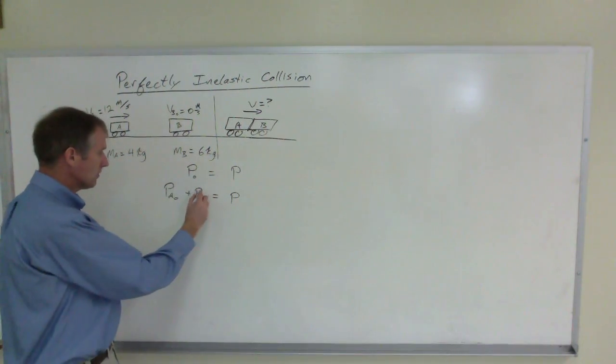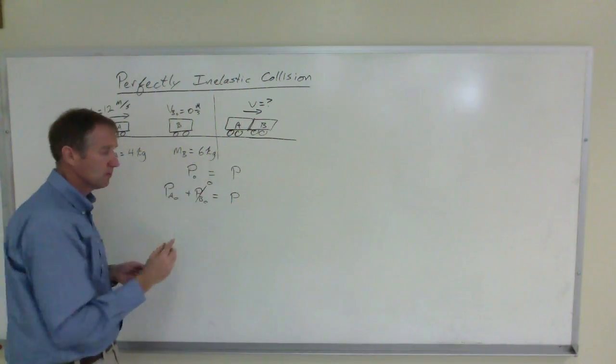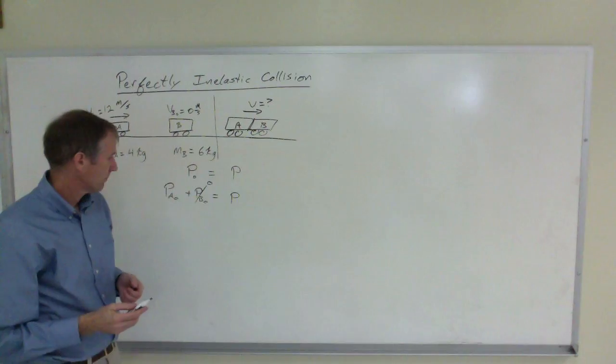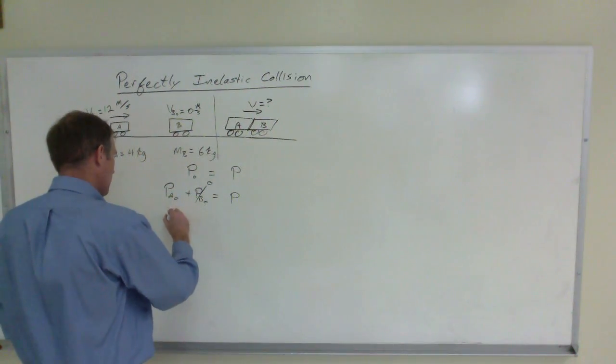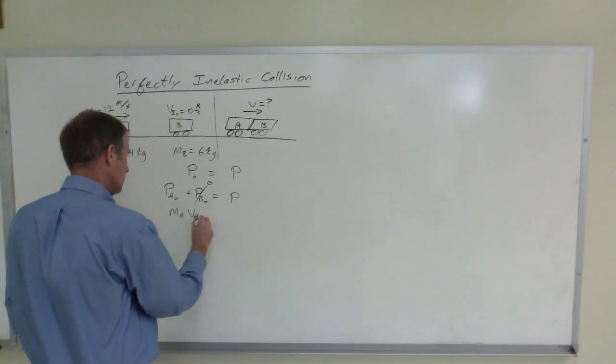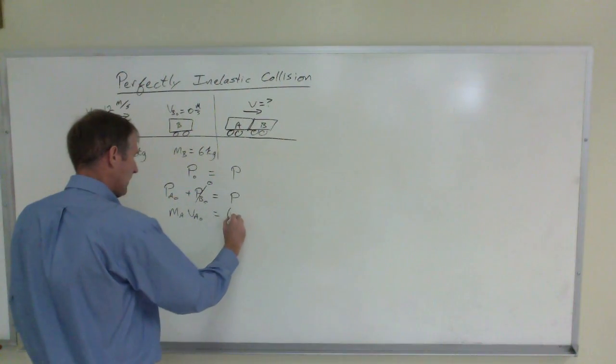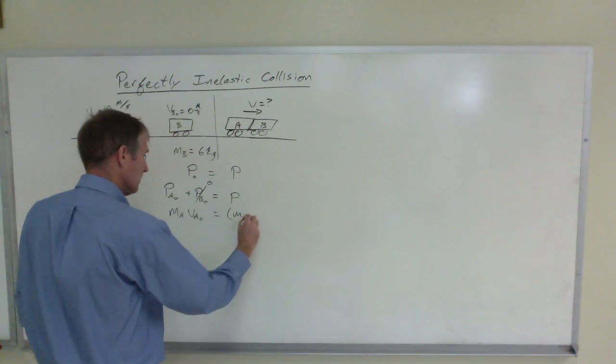But B is at rest and so it has no momentum initially. So this is the mass of A times its initial velocity, and this is going to be the mass of the system, which is 10 kilograms in this case.